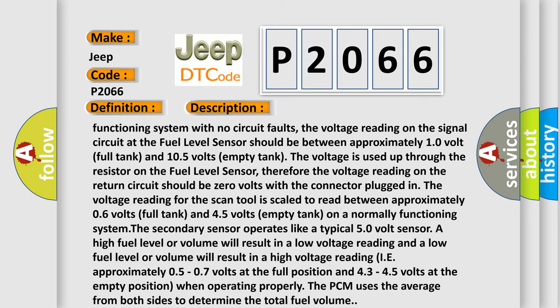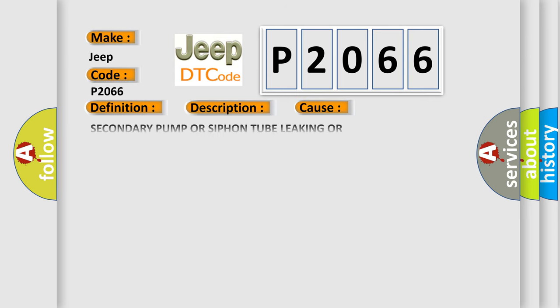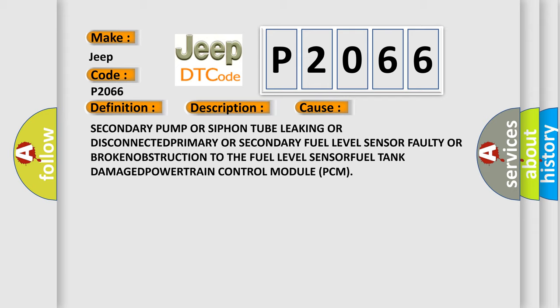This diagnostic error occurs most often in these cases: secondary pump or siphon tube leaking or disconnected, primary or secondary fuel level sensor faulty or broken, obstruction to the fuel level sensor, fuel tank damaged, powertrain control module PCM.